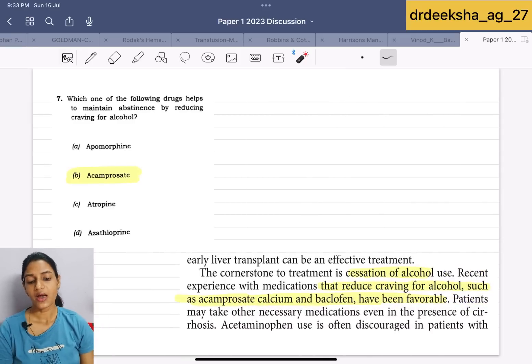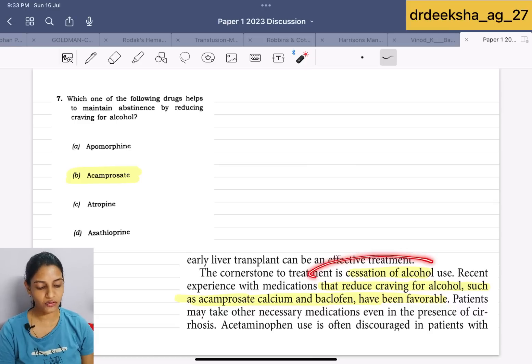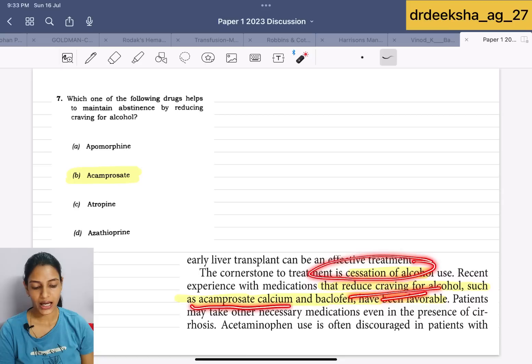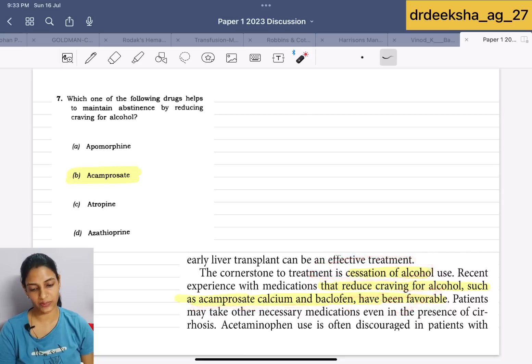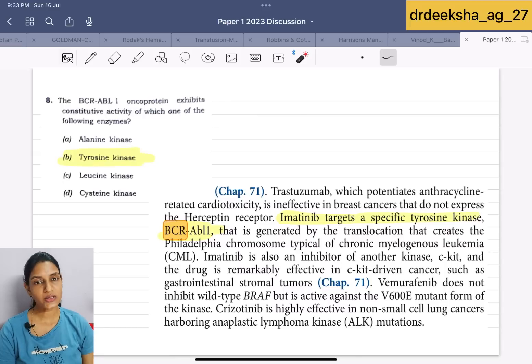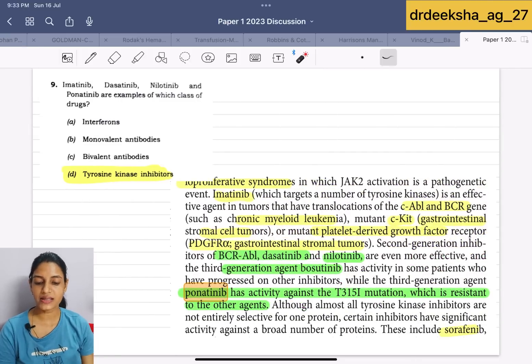Next question they are saying, which one of the following drugs helps to maintain the abstinence by reducing craving for alcohol? For cessation of alcohol to reduce the craving, acamprosate, calcium and baclofen have been favorable. Answer for this is acamprosate. Next question they are talking about BCR-ABL-1 oncoprotein exhibit constitutive activity by which of the following enzyme? We all know it is by the tyrosine kinase. Imatinib targets specific tyrosine kinase, BCR-ABL-1 and we all know we use imatinib in the CML. Next question is again related to that, that imatinib, dasatinib, nilotinib and ponatinib are example of which class of drugs? As just now we studied, the answer is tyrosine kinase inhibitors.